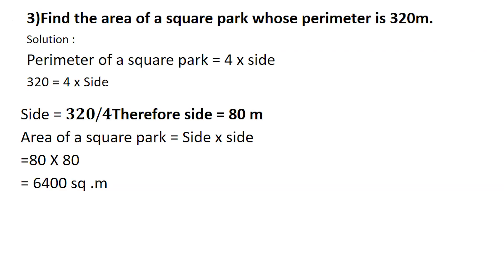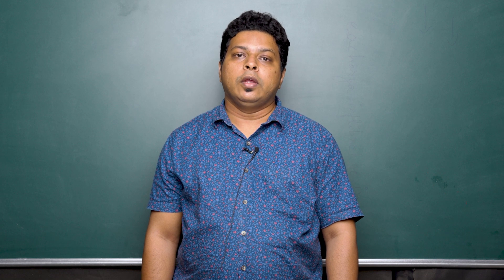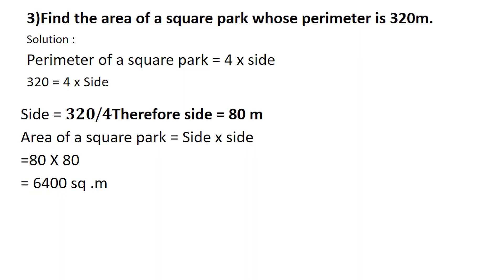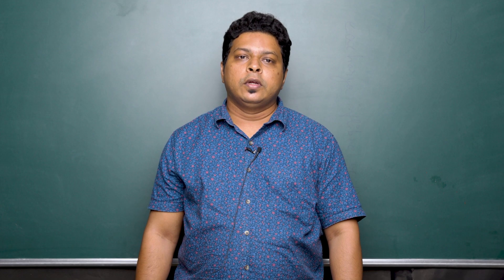Third problem: find the area of a square park whose perimeter is 320 meters. Here you are given the perimeter and asked to calculate the side. Perimeter of a square park is 4 into side, so 320 = 4 into side, therefore side = 320 divided by 4 = 80 meters. Area of the square park would be side into side, which is 80 into 80, that is 6400 square meters.